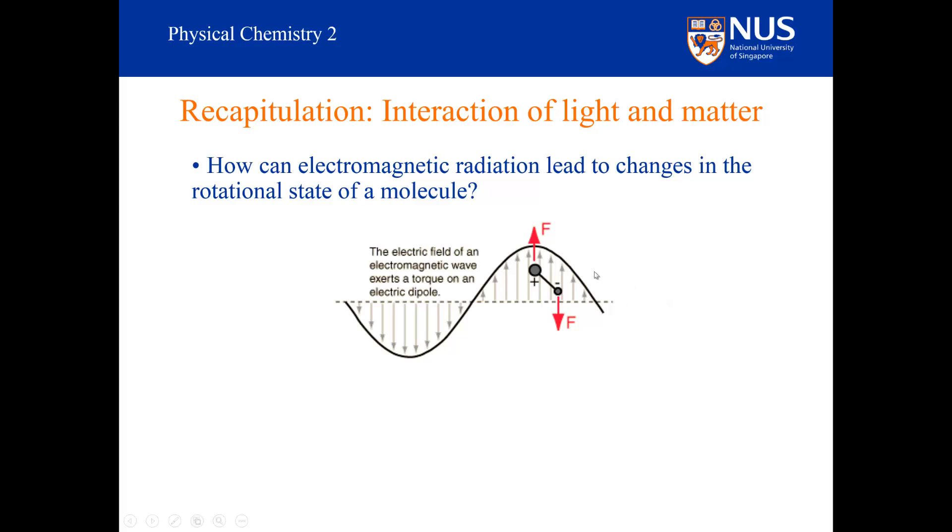The electric field will exert a force on the positive end of the molecule in the opposite direction to the force it will exert on the negative end of the molecule. This will exert a torque or turning force on the molecule. As the electromagnetic radiation passes over the molecule, we can imagine that the molecule could be forced to rotate at some frequency. Although this explanation is flawed, it does give you an idea of how light and matter can interact and manifest itself in changes in rotation.